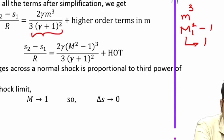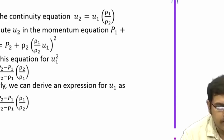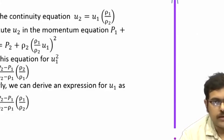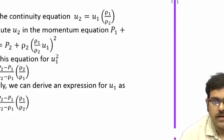Having discussed the strong shock and weak shock limits, let us now look at another facet of normal shocks: the Hugoniot equation. The Hugoniot equation expresses the properties across the normal shock only in terms of thermodynamic variables — velocity does not appear in the expression. This allows us to look at all possible shock states.